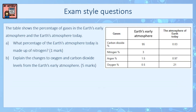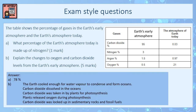The second exam style question is a little bit longer. The answer: nitrogen makes up 78% of the earth's atmosphere today. The second part asks you to explain changes to oxygen and carbon dioxide levels from the earth's early atmosphere. Carbon dioxide has decreased and oxygen has increased. The earth cooled enough for water vapour to condense and form oceans, allowing carbon dioxide to dissolve. Carbon dioxide was also taken in by plants for photosynthesis, releasing oxygen, and was locked up in sedimentary rocks and fossil fuels.